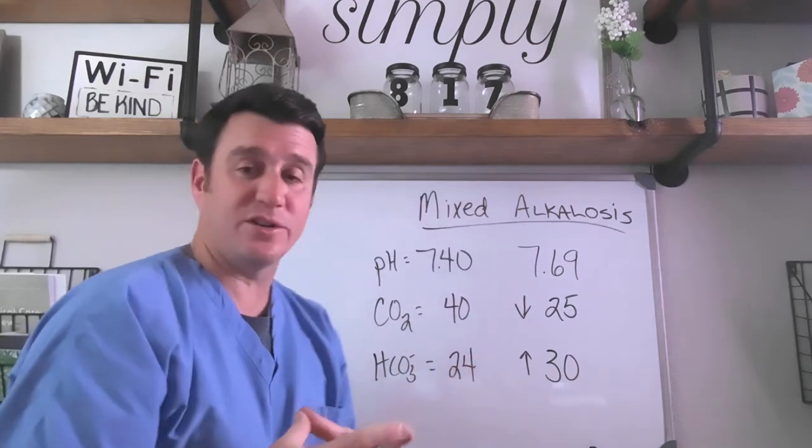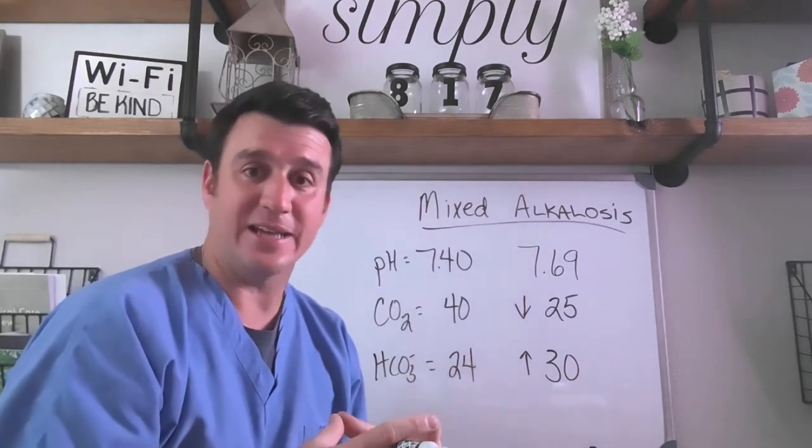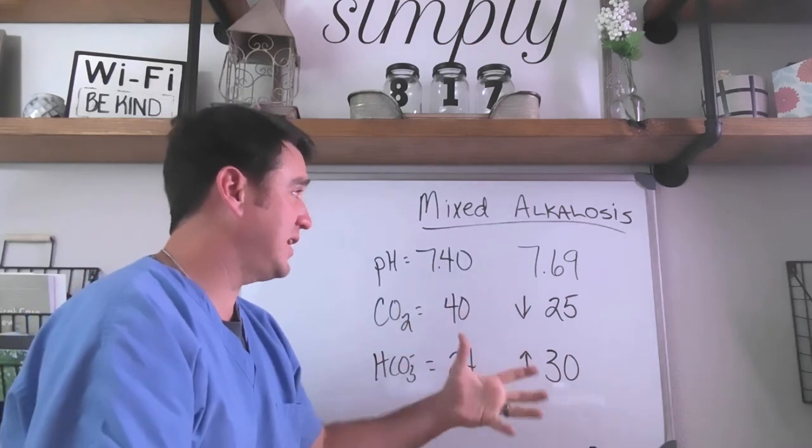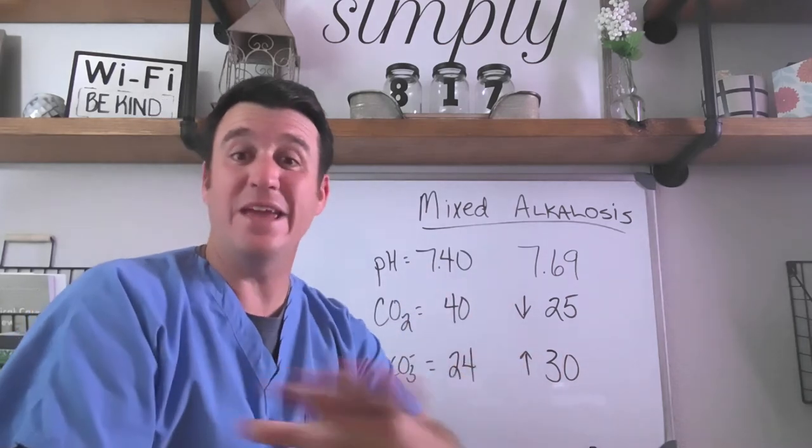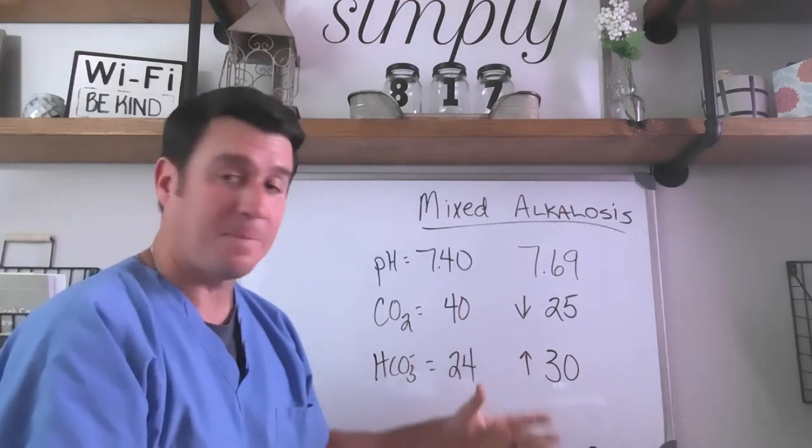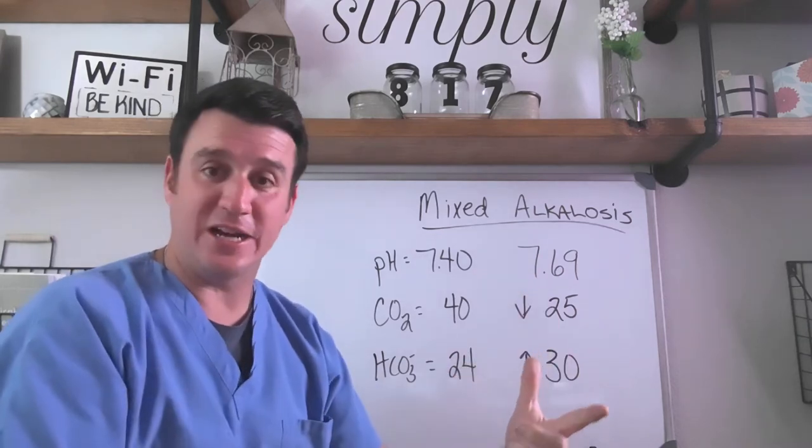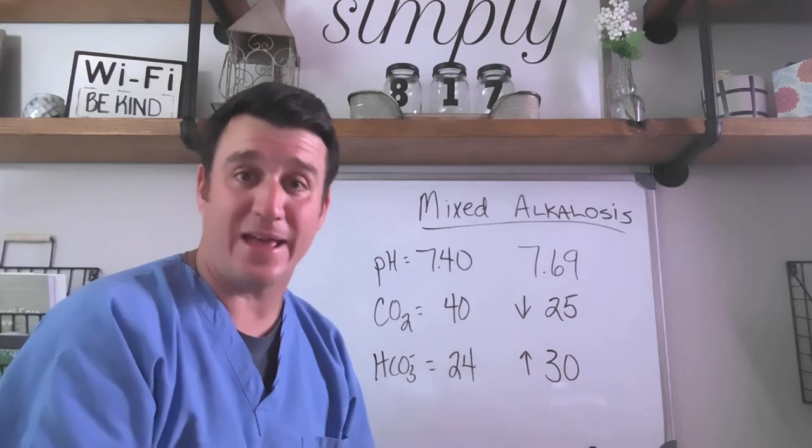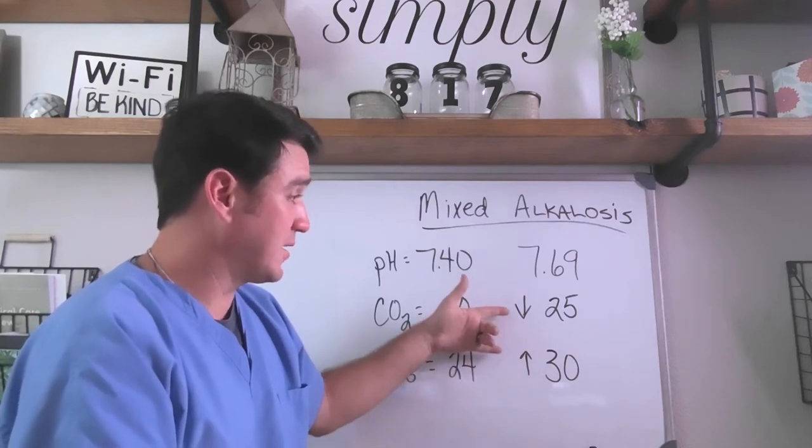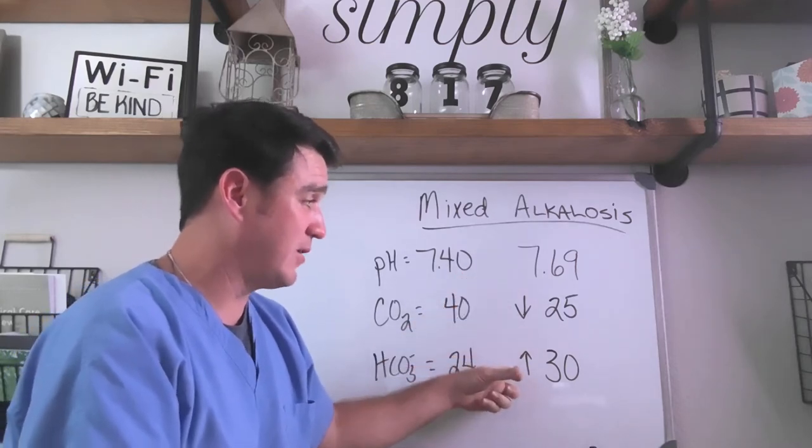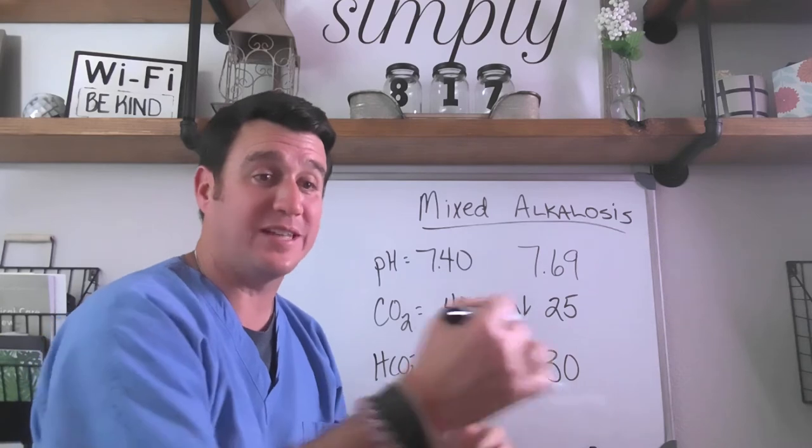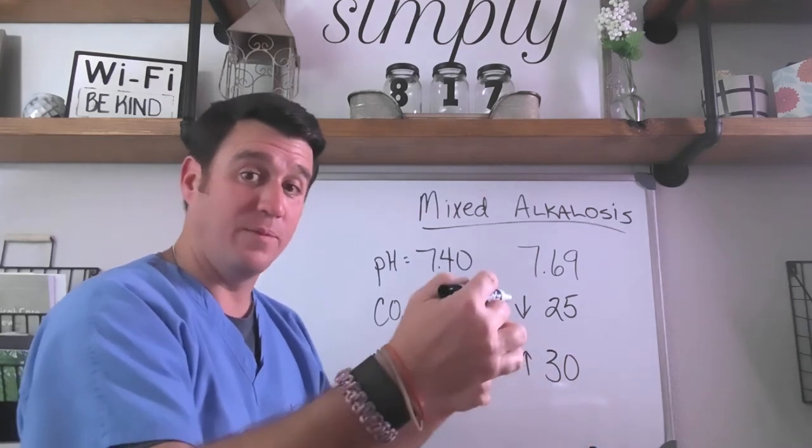Here's what I want you to understand, because I see this a lot. I see students who say it must be a partially compensated mixed alkalosis. Let me help you right now. If you ever have a mixed problem, such as this, there is no compensated, partially compensated, compensating, there is none of that. There's not any of that, because you can't have both of your components, your respiratory component and your metabolic component, one can't compensate for the other if they're both going towards the alkalotic range.